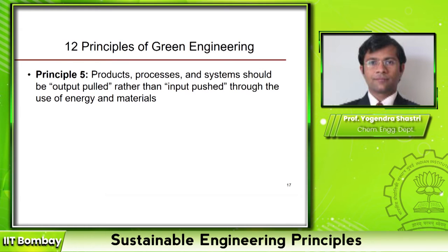The other option is to have a supply chain that depends on demand for the product. You may have heard of just-in-time delivery, where the idea is that whenever demand is there, you develop your supply chain to respond quickly, manufacture, and quickly deliver to the consumer so you do not have to maintain a lot of inventory. This is an example of an output pull system. In general, an output pull system reduces material and energy investment.